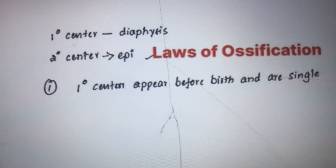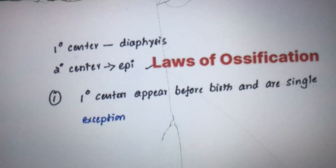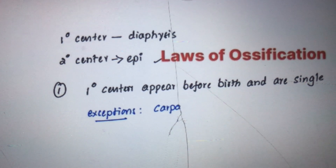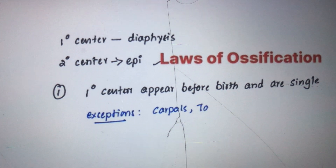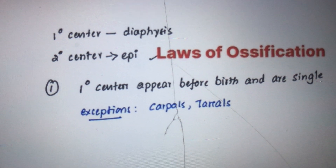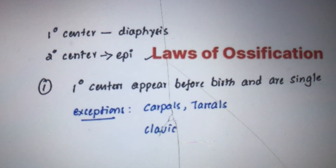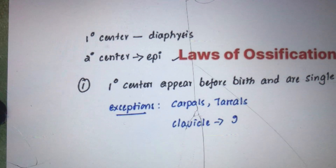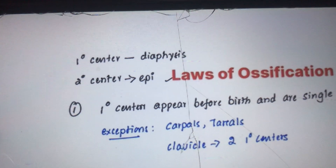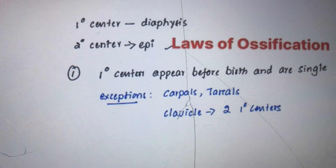There are exceptions to the first rule. The carpal bones and tarsal bones have centers that appear after birth. Additionally, the clavicle has two primary centers of ossification.